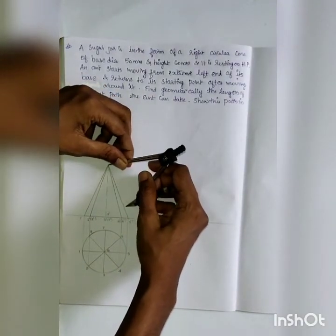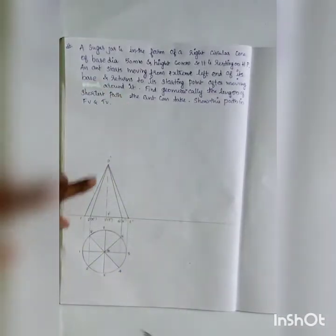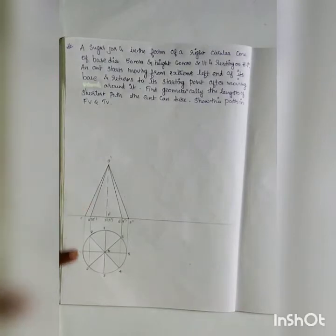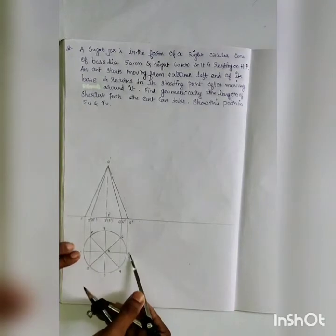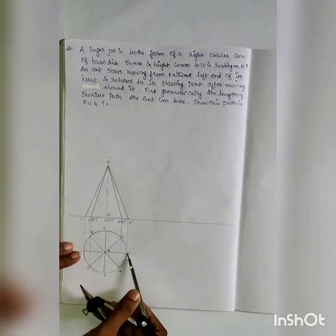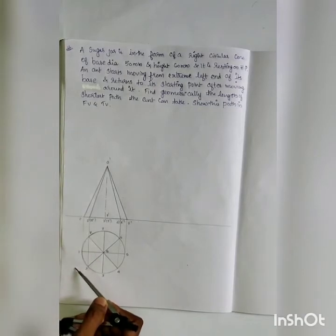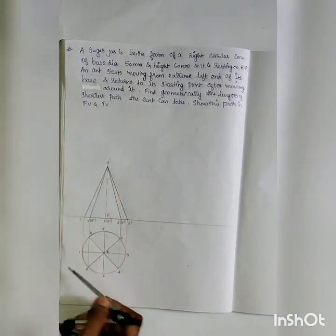This is the slant height. The slant height is marked as 1, 5, and O. We draw lines parallel to the XY line. In the generators, we will mark these lengths.